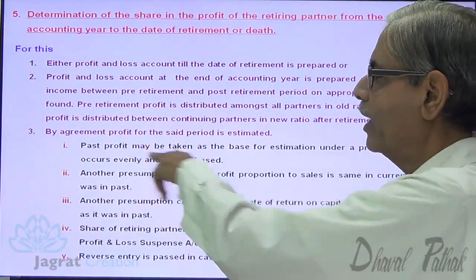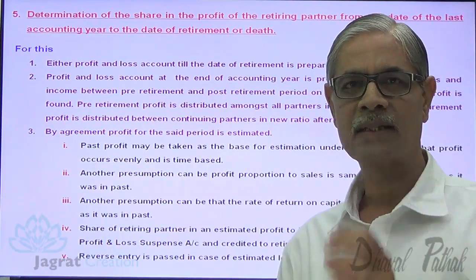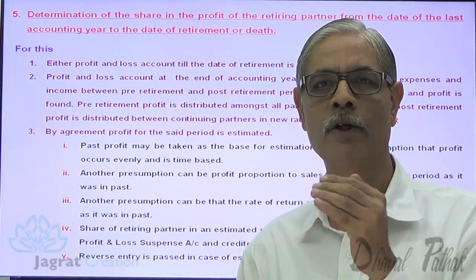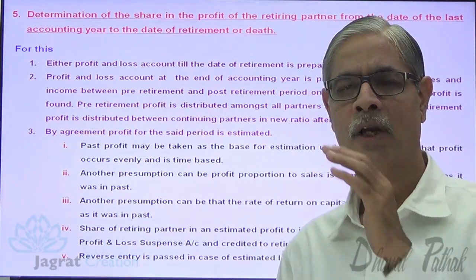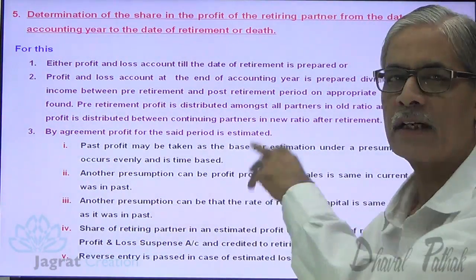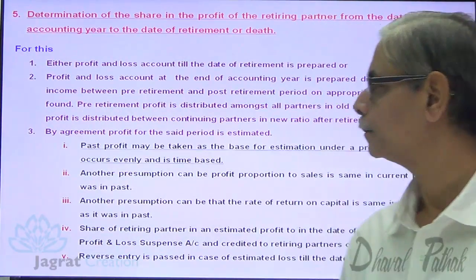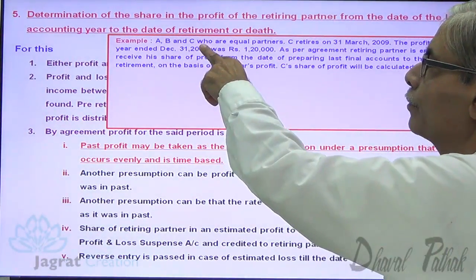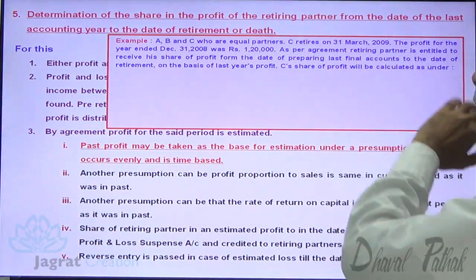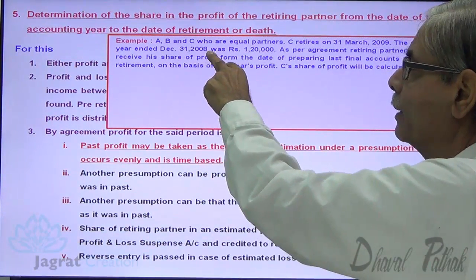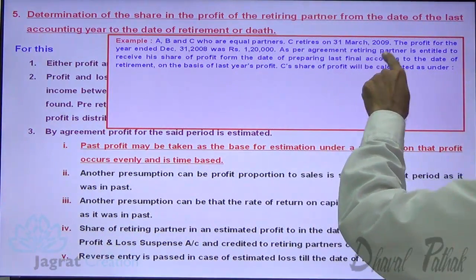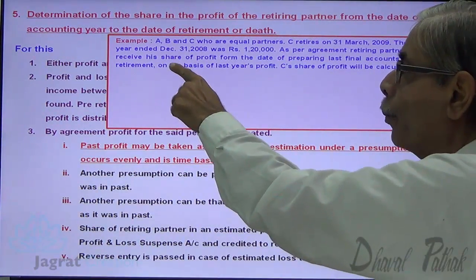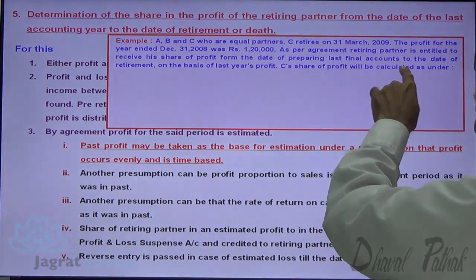Let me take an illustration where estimation is done on the basis that profit is time-based. A, B, and C are equal partners. C retires on 31st March 2009. The profit for the year ended 31st December 2008 was ₹1,20,000. As per the agreement, the retiring partner is entitled to receive his share of profit from the date of the last final accounts till the date of retirement. C's share of profit will be calculated on the basis of last year's profit.